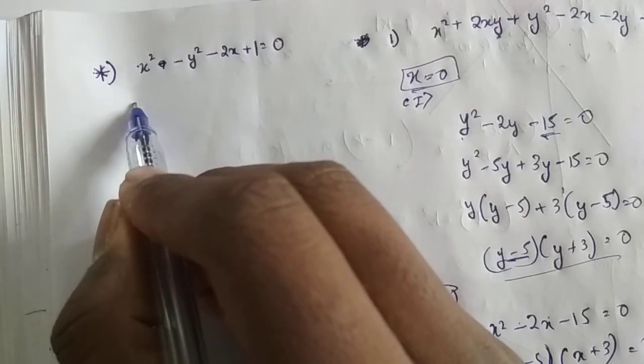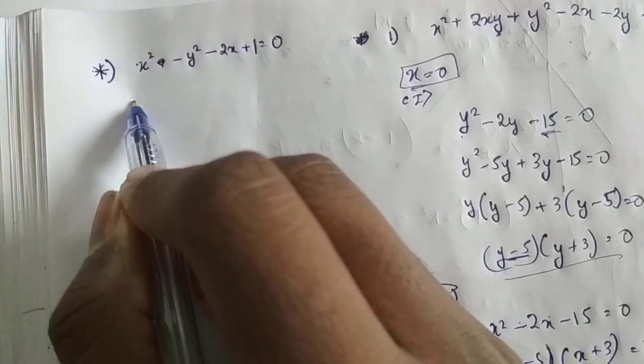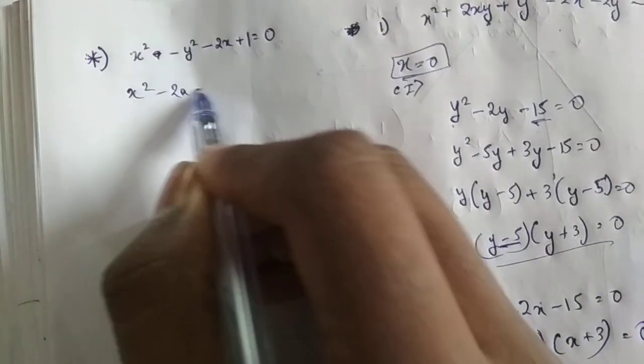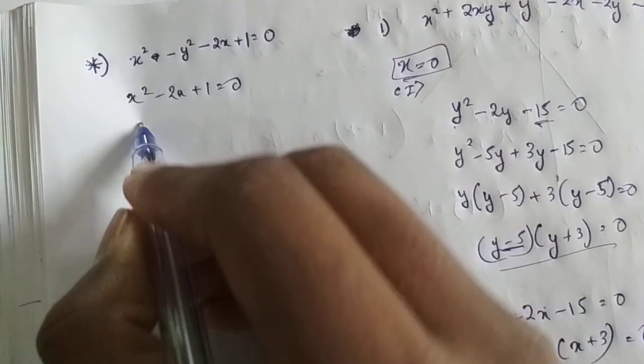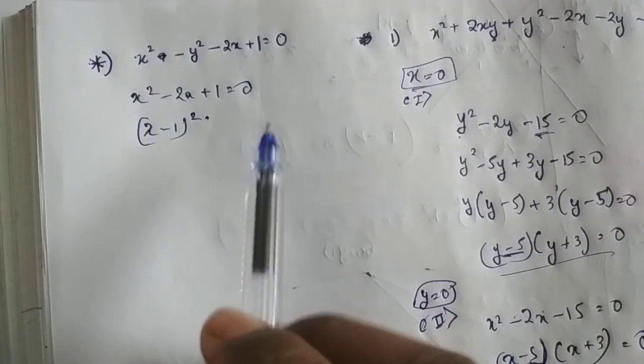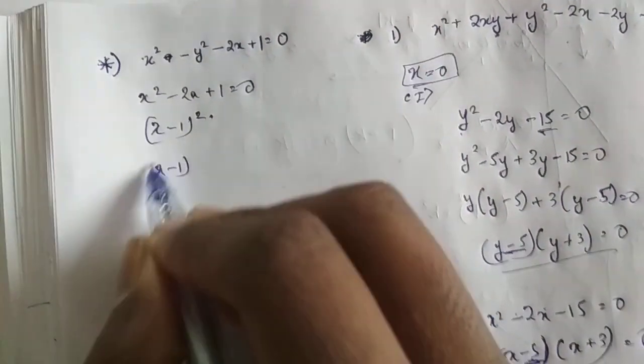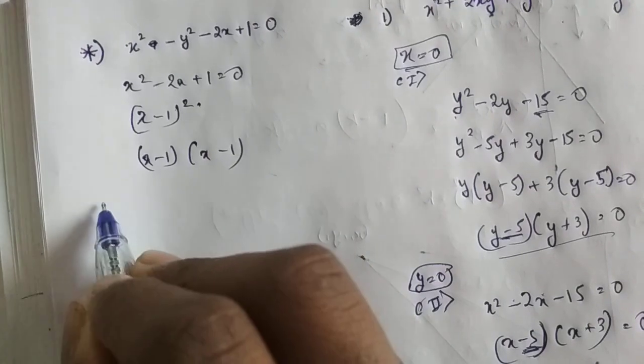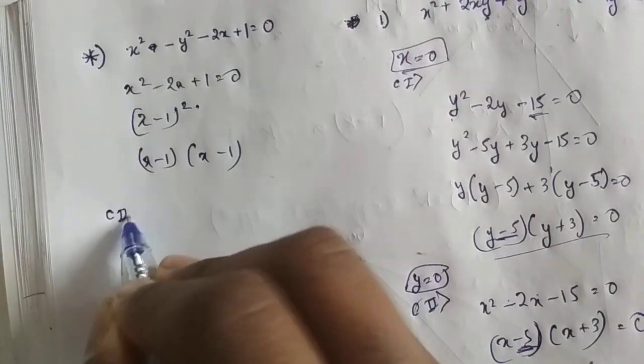So here if you put y equals to 0, x square minus 2x plus 1 equals to 0. What do we get? x minus 1 whole square, because this is a whole square form, or you can write x minus 1 into x minus 1 for clarity. And in case 2...